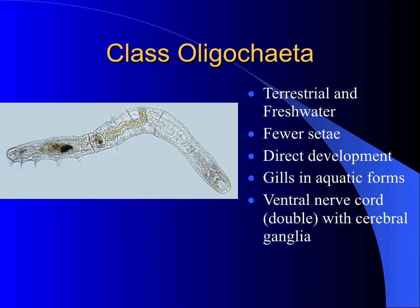The annelids we probably know best fall into the class Oligochaeta, meaning 'having few appendages.' These are the terrestrial and freshwater worms we know. Some are quite small. They may go through the larval stage right in the egg, so you may not see a free-swimming trochophore — this is common in many terrestrial organisms. They also have a ventral nerve cord that's doubled with ganglia around the pharynx.